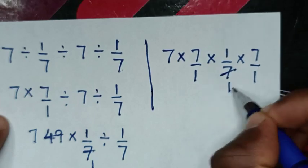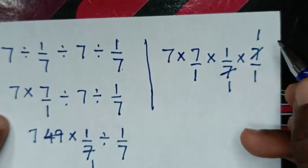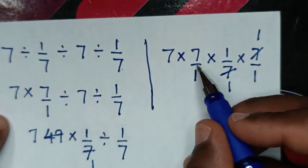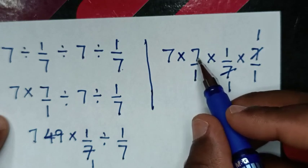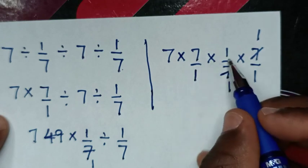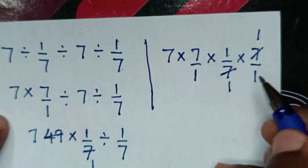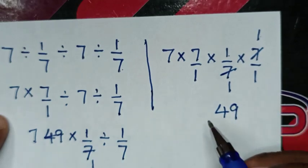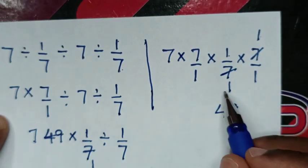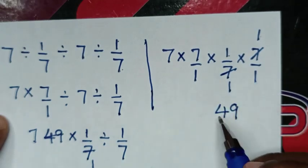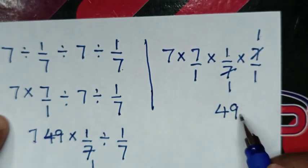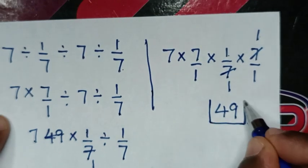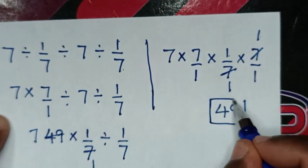The 7s cancel by 1 and 1. Then 7 times 7 is 49; 49 times 1 times 1 is 49. And 49 divided by 1 times 1 is 1, so 49 divided by 1 is 49. Therefore, this is our final answer.